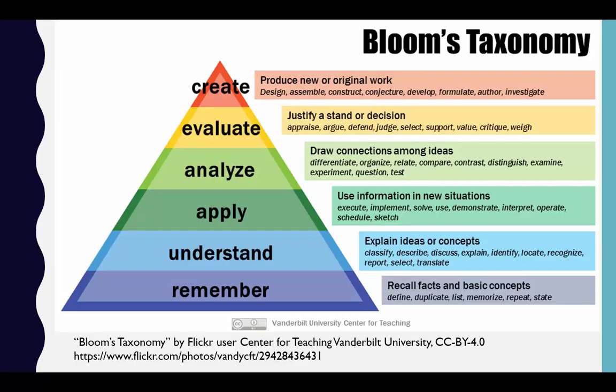If you've heard of backward design, you've probably heard of Bloom's revised taxonomy. The Spark tutorials are based on learning objectives written at the bottom two levels of Bloom's revised taxonomy, which translates very well to automated online tutorials. If you want students to remember what the library has to offer, that's easily translatable into an online tutorial. If students need to understand basic concepts — like they can use the catalog to search for books — that's also easily translatable to an online tutorial.